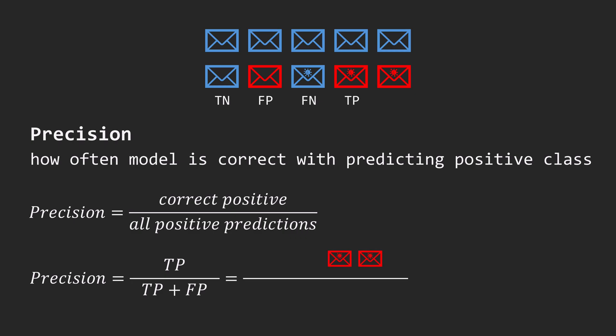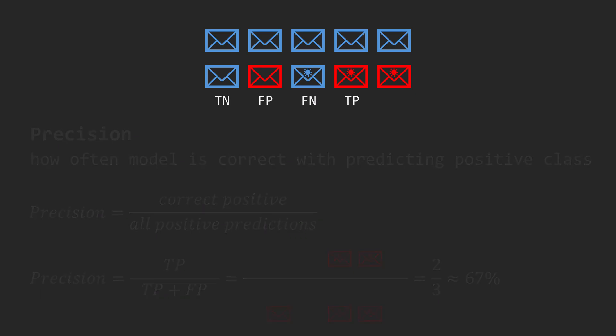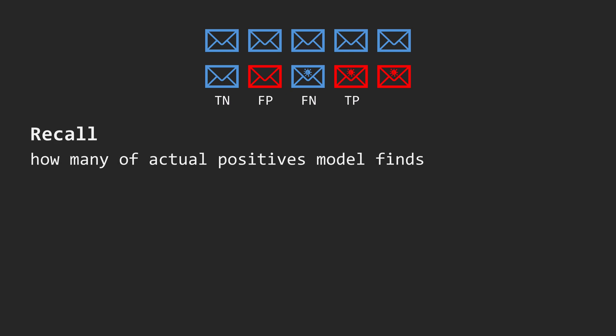Here, we have two correctly identified spam emails and one false positive, giving a precision of 2 out of 3, or approximately 67%. The final metric, recall, measures how many of the actual positives the model finds.